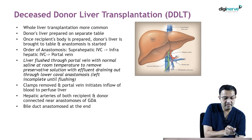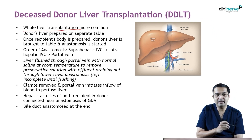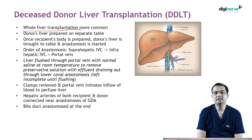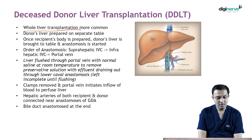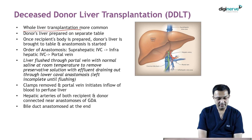In deceased donor liver transplantation, most commonly the whole liver is transplanted. The cadaveric liver which has been harvested is prepared on a separate table — we call it back table preparation. Once the recipient body is ready, the liver from the donor is brought to the table and anastomosis is started.